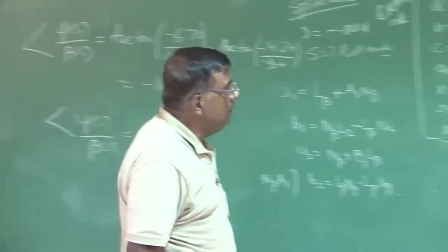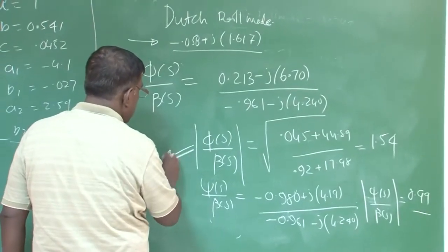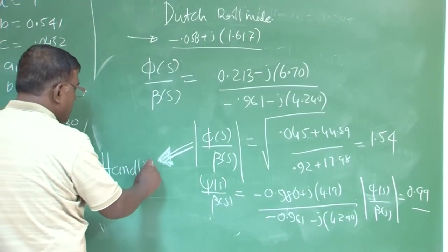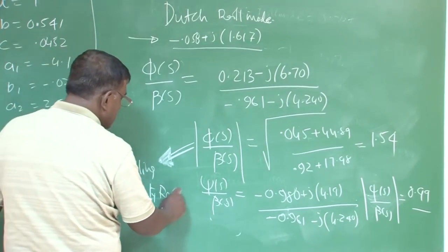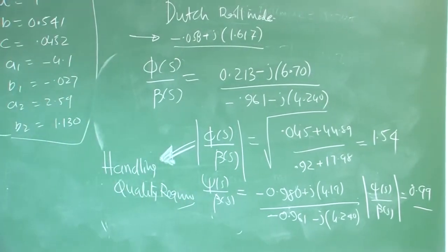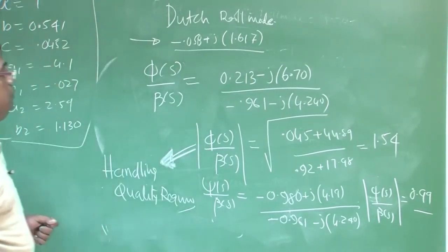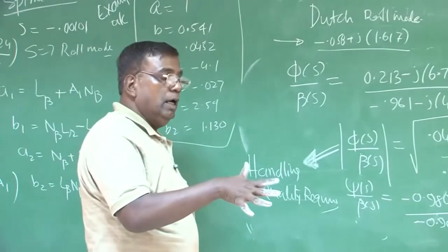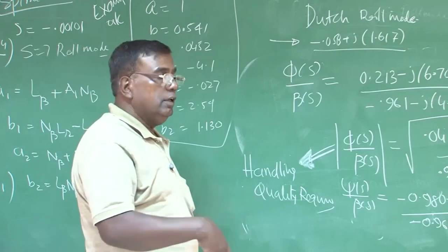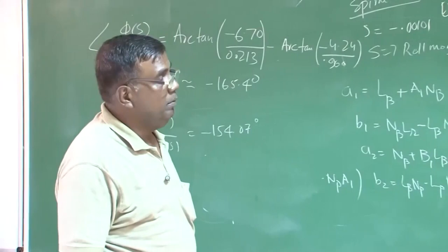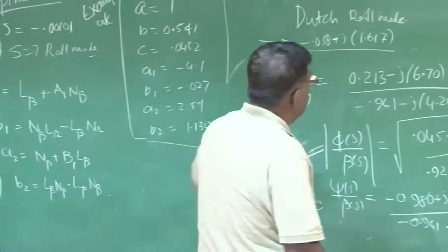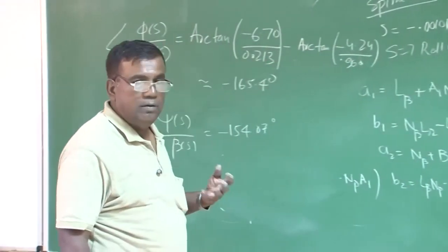This phi(s)/beta(s) ratio is important from handling quality requirements. We want this ratio to be as low as possible to validate and justify acceptance for natural excitation. That is extremely important. If the airplane is banking and this ratio is very, very high, then you can understand that dutch roll oscillation acceptance will not be approved — it should be as low as possible. So in a nutshell, with this simplistic approach, you could get so much information out of these mode shapes.